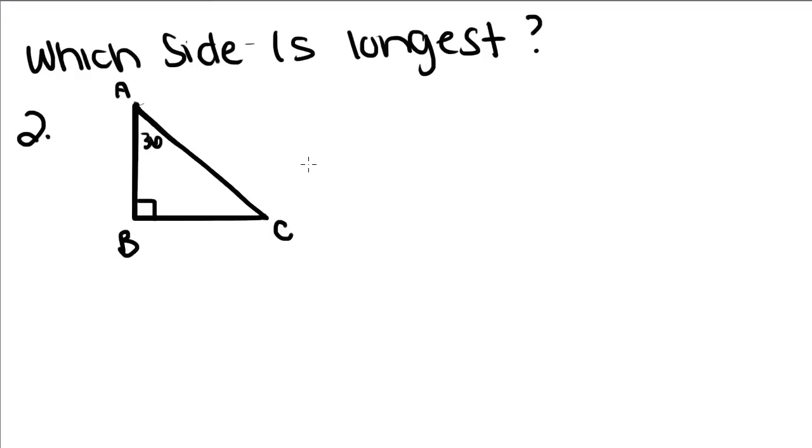Which side is longest? Well we know this is a right angle, and a right angle measures 90 degrees. We need to find the measure of this angle. So, that's 30 by the way, if you couldn't tell. 90 plus 30 is equal to 120.